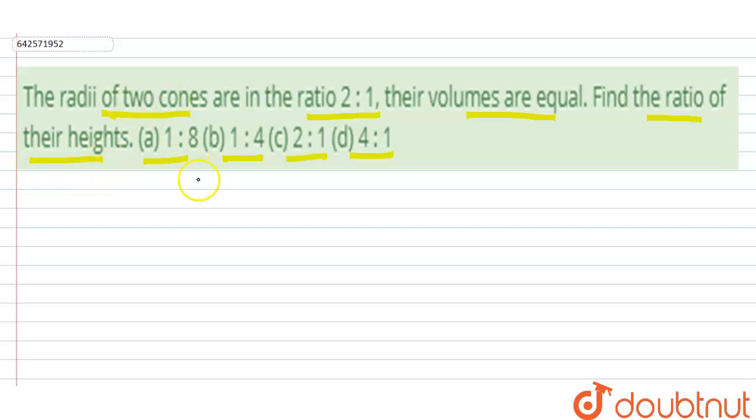Let's take both cones. This is cone 1 and this is cone 2. The radius of the two cones are in the ratio 2:1, so RC1 equals 2R and RC2 equals R. They have the same volume.